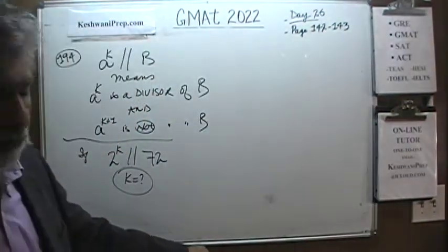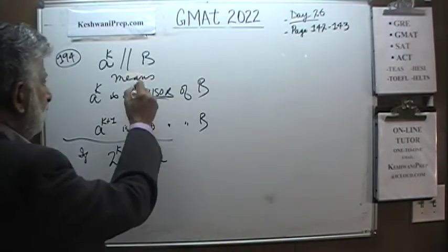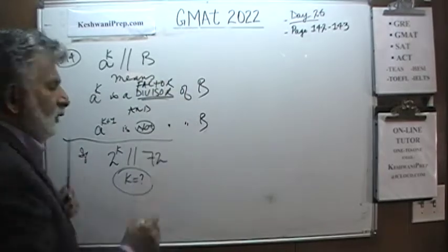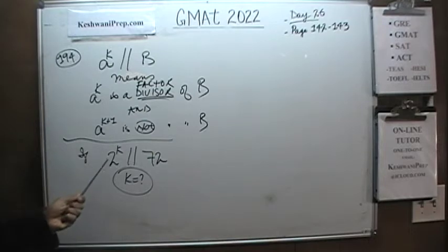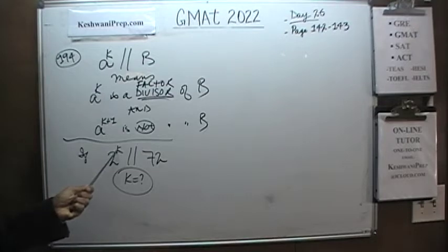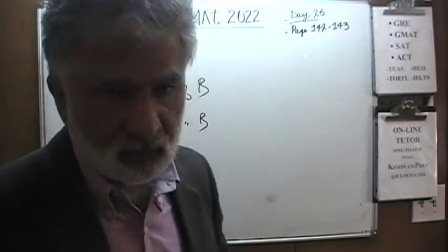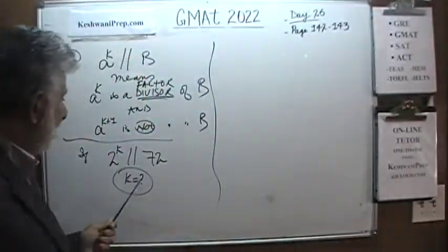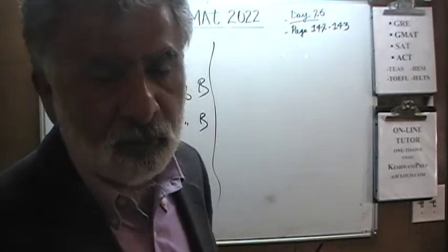First thing first — what does the term divisor mean? Divisor is just a fancy way of saying factor. So we are looking for a situation where a equals 2, where 2 raised to k is a factor of 72, but 2 raised to k plus 1 is not. If we find such a situation, that's our answer. Since we are dealing with 72, the best thing to do is write out 72 with all its prime factors.